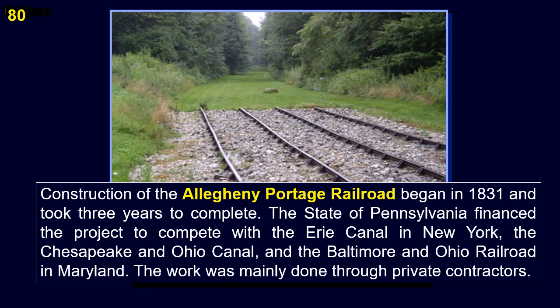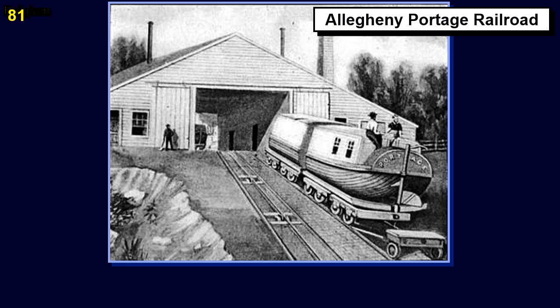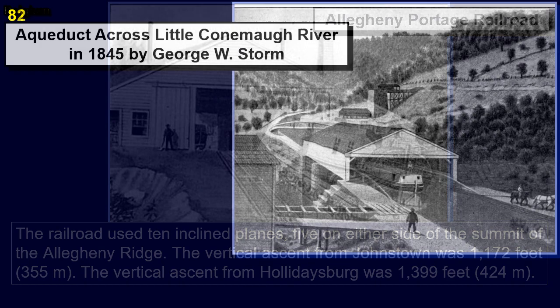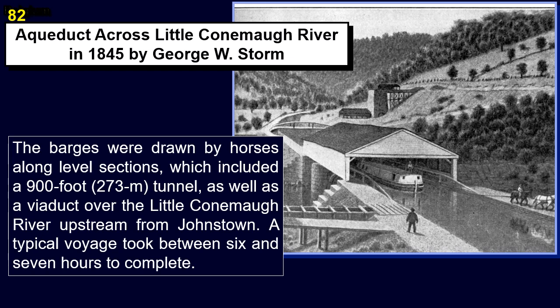The railroad used 10 inclined planes, five on either side of the summit of the Allegheny Ridge. The vertical ascent from Johnstown was 1,172 feet (355 meters), and from Hollidaysburg was 1,399 feet (424 meters). Barges were drawn by horses along level sections, which included a 900-foot (273-meter) tunnel and a viaduct over the Little Conoma River upstream from Johnstown. A typical voyage took between six and seven hours to complete. The entire main line system connecting Pittsburgh and Philadelphia was 400 miles long.